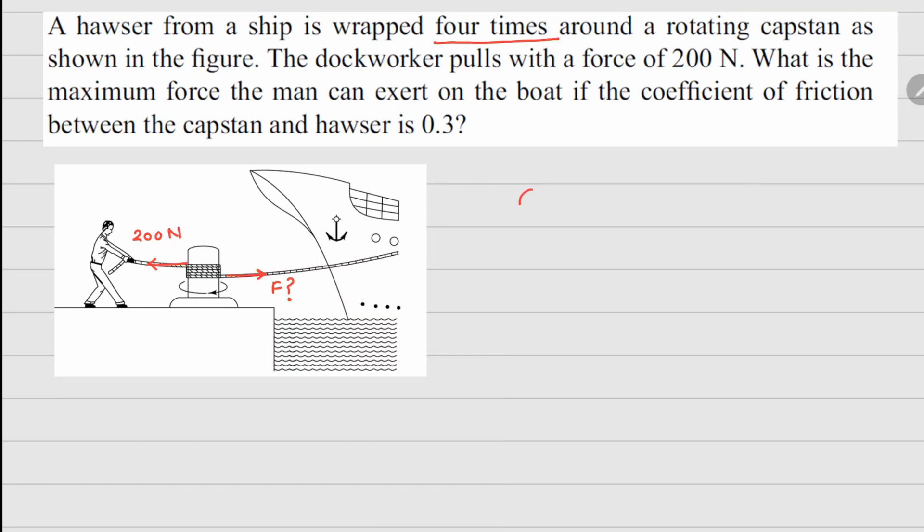For this problem, one important concept that we need to understand is that if there is a rope on a roller like this, and in the string there are these tensions T1 and T2, for the case when there is no friction we know that T1 has to be close to T2.